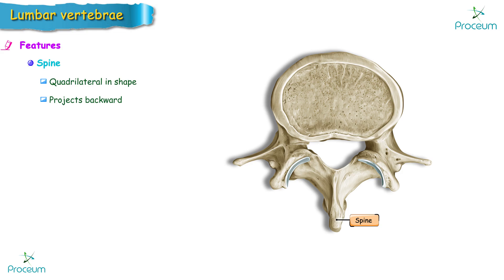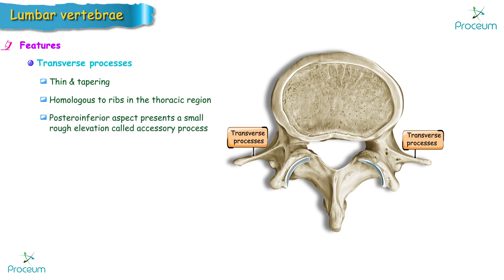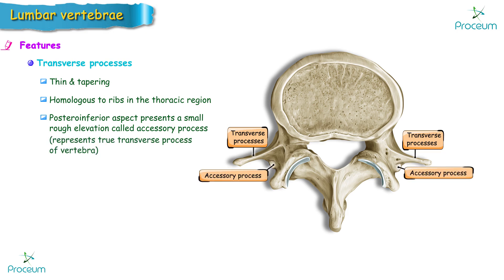The transverse processes are thin and tapering, and are homologous to the ribs in the thoracic region. The posterior inferior aspect of each transverse process presents a small rough elevation called the accessory process, which represents the true transverse process of the vertebra.